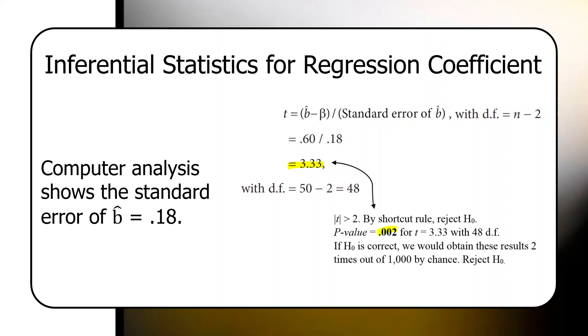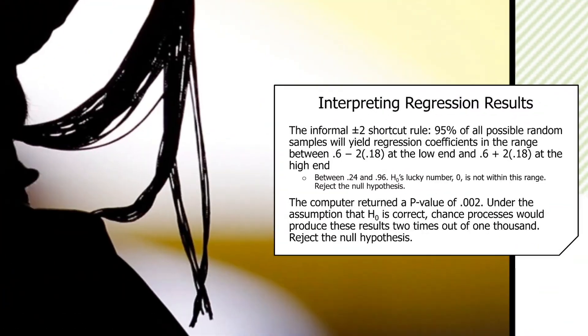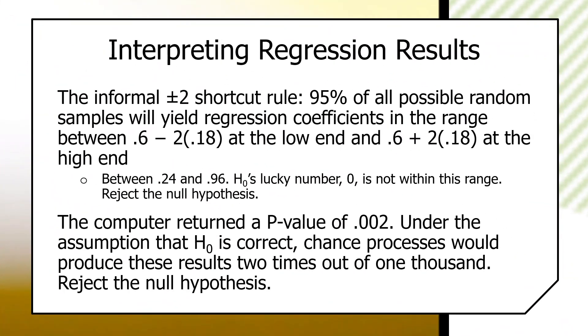Just to review. The informal plus or minus two shortcut rule: 95% of all possible random samples will yield regression coefficients in the range between .6 minus 2 times .18 at the low end, and .6 plus 2 times .18 at the high end. So, quick and easy between .24 and .96.